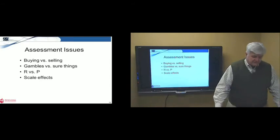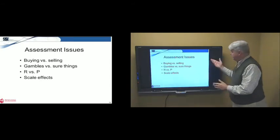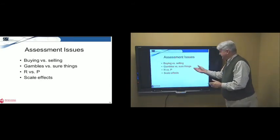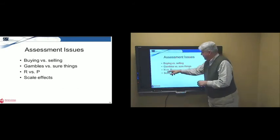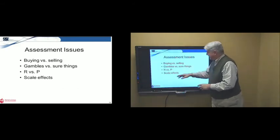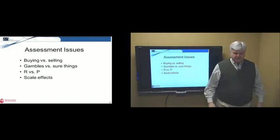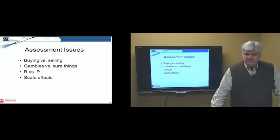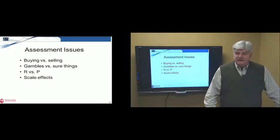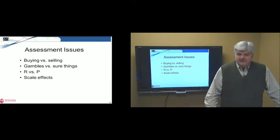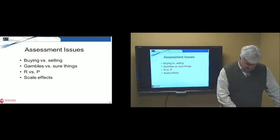And back early when we dealt with the Allais problem with A and B and then C and D, you can see that having to take a risk, that the only choice is a lottery, makes a difference in terms of your attitude towards risk. So assessment issues, there's buying versus selling. There's gambles versus sure things. There's varying the reward versus varying the probability. And there's some scale effects. And there was a famous study done at Harvard many years ago reporting on people making judgments about amounts of money that they had seldom experienced. And they basically found that people had a very hard time being consistent. And that may play into our Allais paradox a bit also.